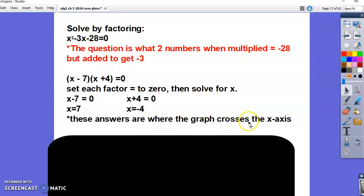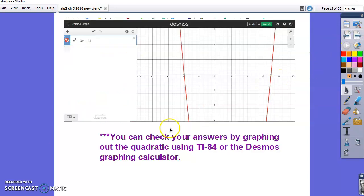So these are the answers. This is how you solve by factoring. But don't forget when we were graphing these, we could see where they were crossing the x-axis. I went to the Desmos calculator on this next page. You can check your answers this way. Look, they're crossing at negative 4 and positive 7.